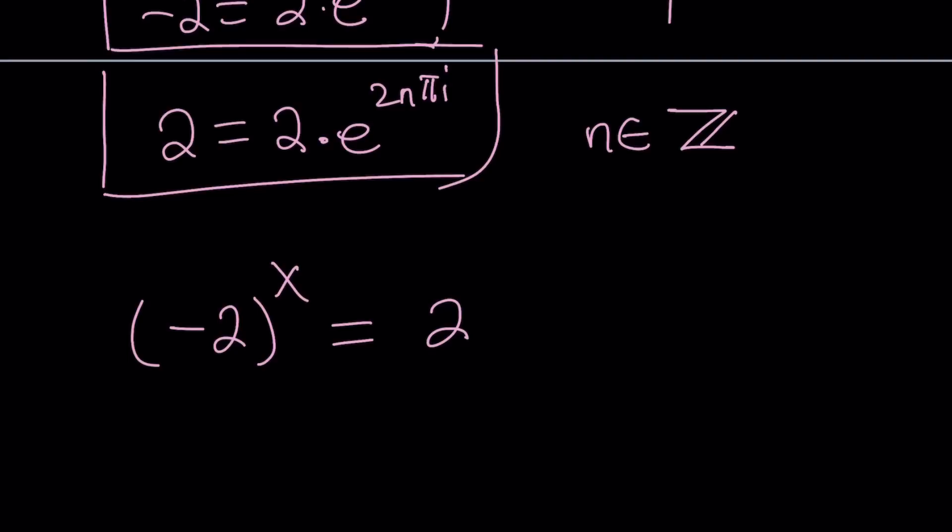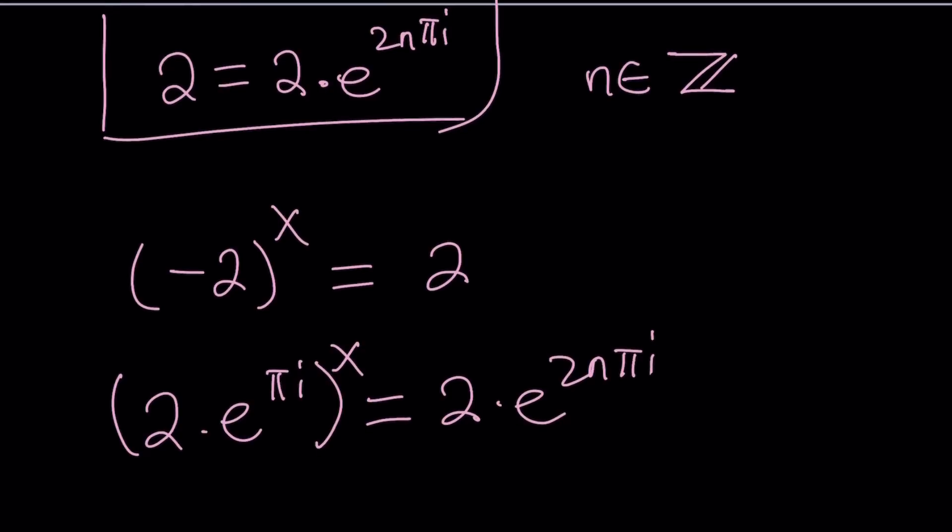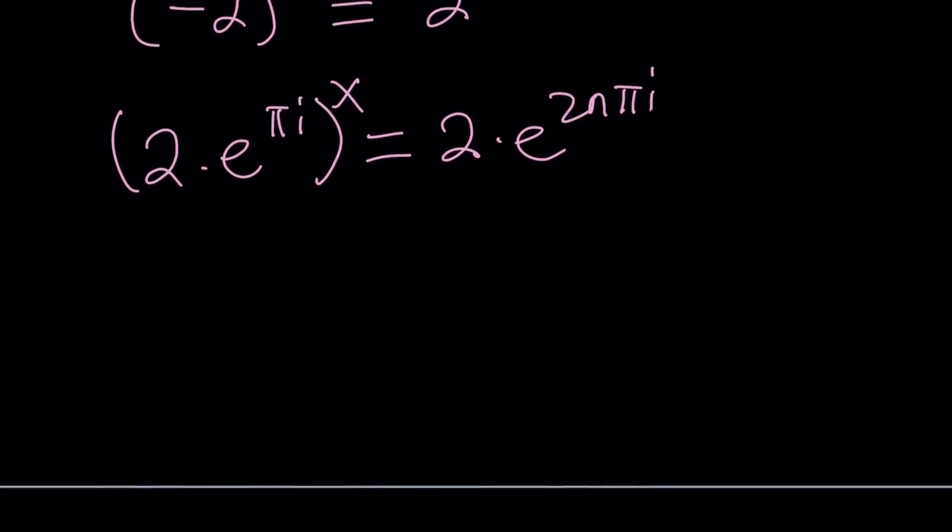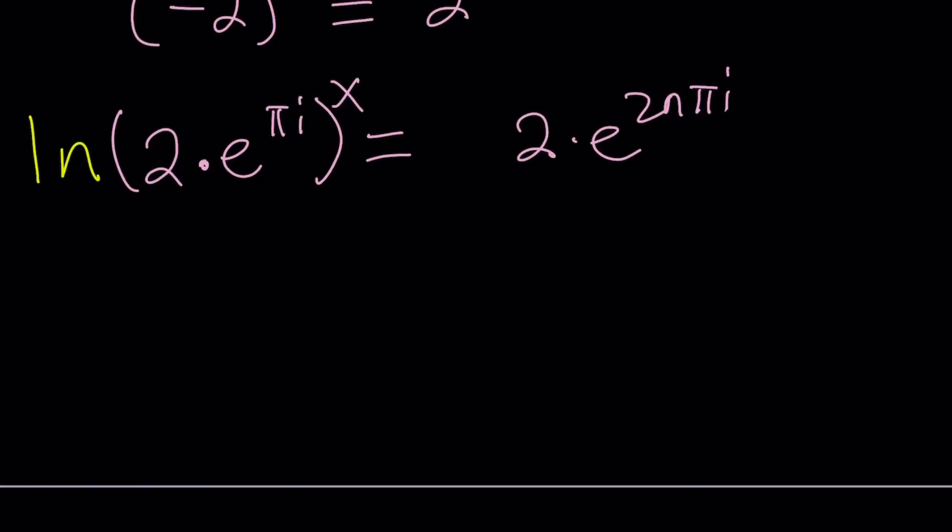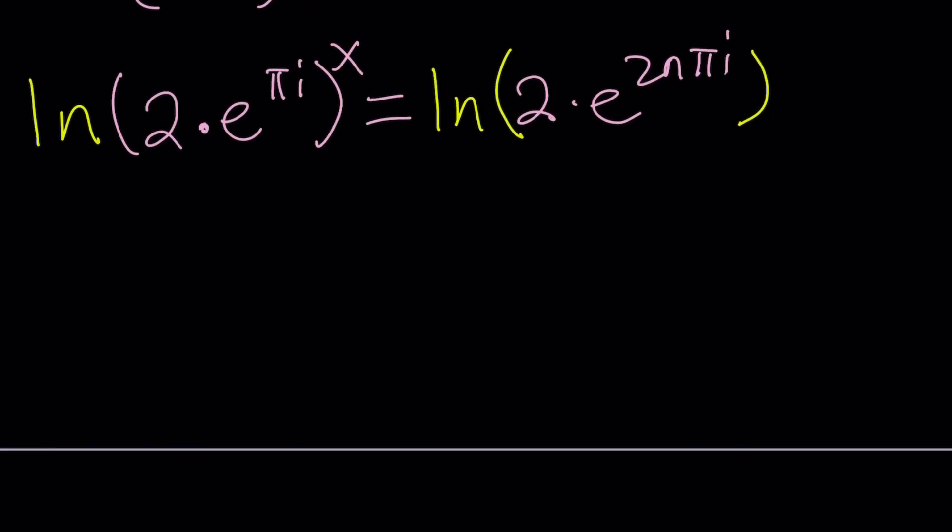So, replace negative 2 with 2 times e to the power pi i, raise it to the power x, and then replace the 2 with 2 times e to the power 2n pi i. Again, n is an integer. 2n pi represents multiples of 2 pi. Now, you can go ahead and distribute the x inside, but instead of that, let's go ahead and natural log both sides, because that would get rid of the exponents. So, let's go ahead and natural log both sides. We're going to do ln, and we're going to do ln.